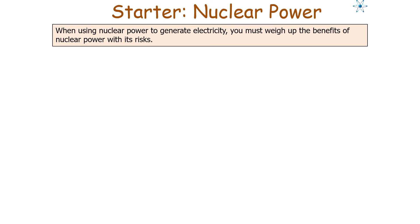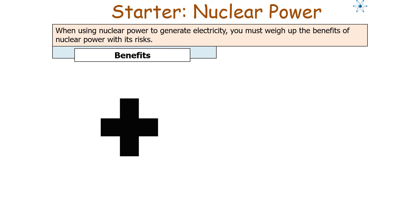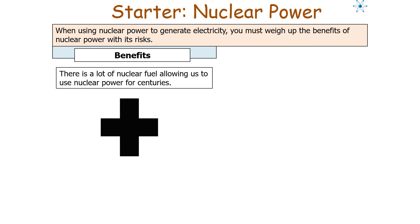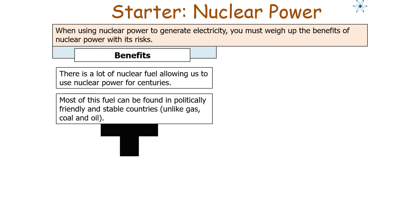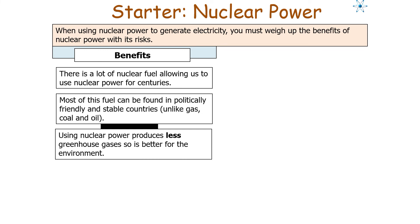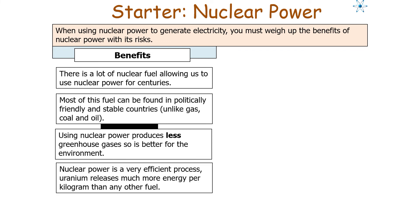When using nuclear power to generate electricity, we must weigh its benefits against its risks. The benefits include: there is abundant nuclear fuel allowing centuries of use, most of this fuel comes from politically stable countries unlike gas, coal, or oil, nuclear power produces less greenhouse gases than fossil fuels so is better for the environment, and uranium releases much more energy per kilogram than any other fuel, making it very efficient.